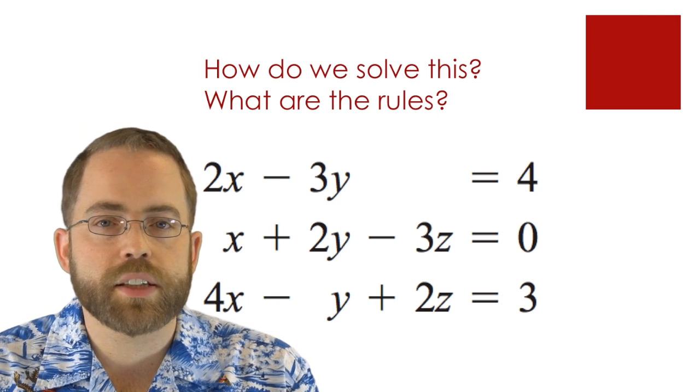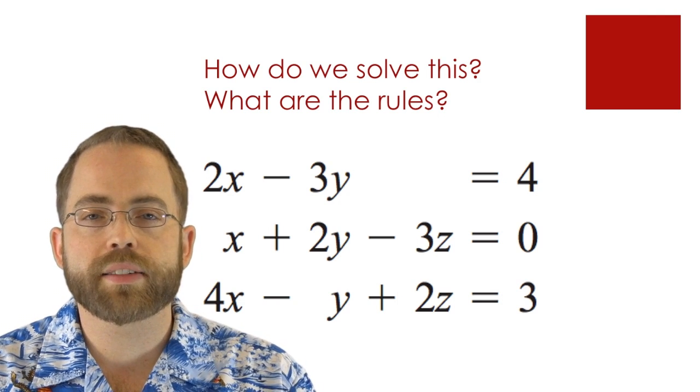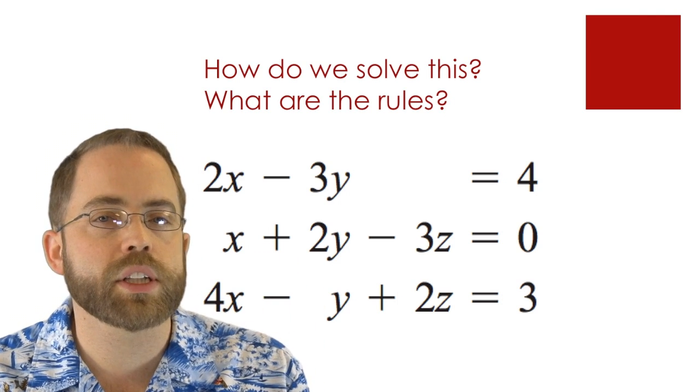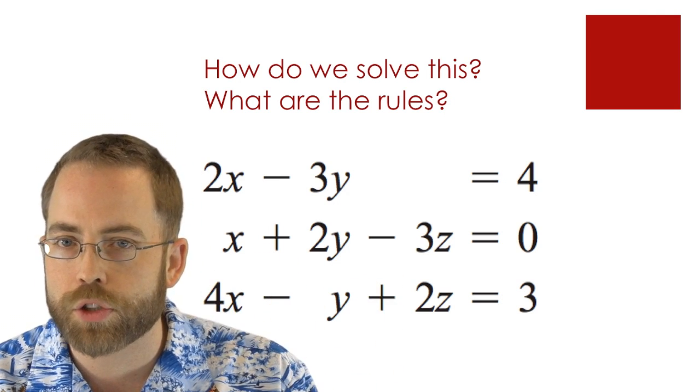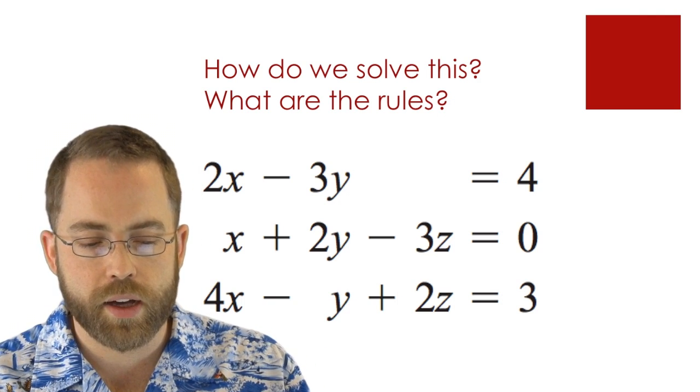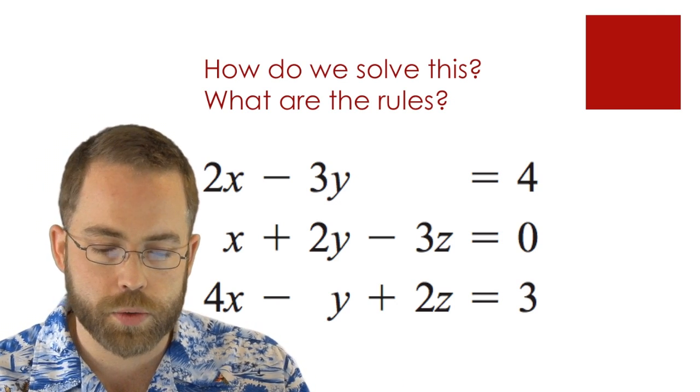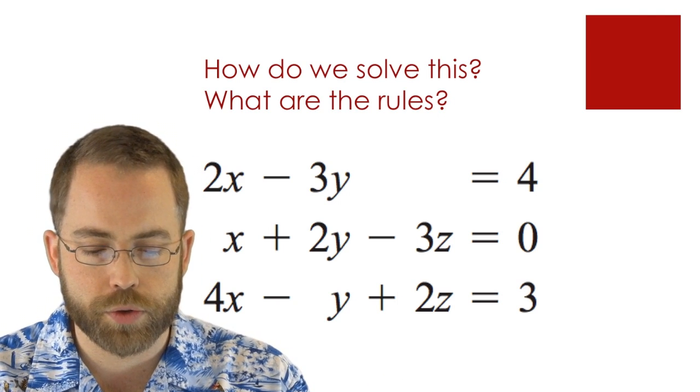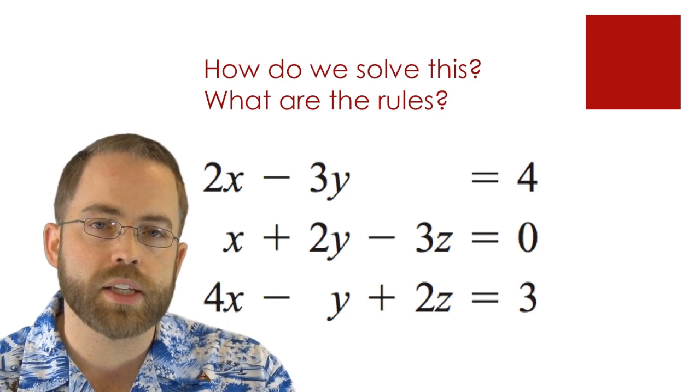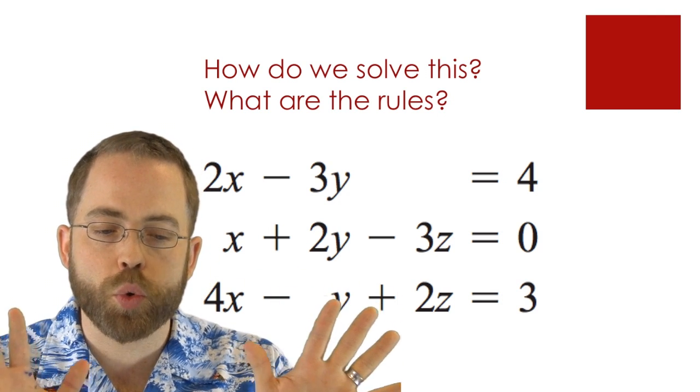So one of the things that you might encounter a lot in solving real world situations is that you know that there's a mix over here and a mix over there and a mix over there and somehow they're all dealing with the same thing but you've only got pieces of the information at any given time. So we might know that 2x is the same as 4 plus 3y. We might know that x plus 2y is equal to 3z. And we might know that 4x plus 2z is equal to 3 plus y. And if you rearrange the pieces of that you end up with these three equations that can be sorted out very, very nicely.